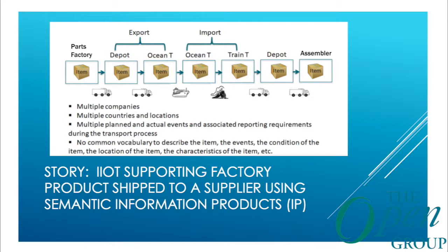The story: in China or India, factory parts are produced, go to a depot by truck or train, onto a ship — seen as an export by China — then arrive in Seattle as an import, travel by train to Portland, to a warehouse, then to Intel for assembly. There's no common vocabulary across that whole chain. Things happen along the way that we've never known about in the past.